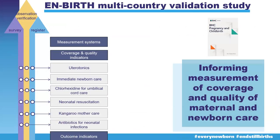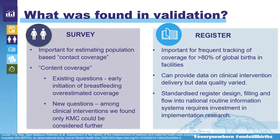We're really interested in routine data at this conference, so focusing on register data: some hospitals and some indicators are good, but breastfeeding has a long way to go in terms of data accuracy. In generalizing our results, survey is really important for estimating population-based contact coverage, but for individual clinical interventions it's very hard for women to report things they may not have seen or that are complex. By contrast, registers filled in by health workers are an important source of data for more than 80% of global births, which are now in facilities. Registers can provide data on clinical interventions, but data quality varies — there's work to be done to standardize register design, filling, and flow into national routine information systems.